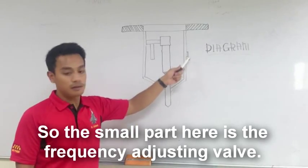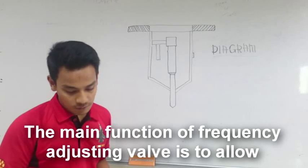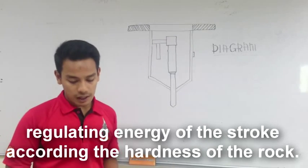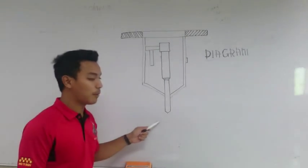This small part here is the frequency adjusting box. The main function of the frequency adjusting box is to allow regulating energy of the stroke according to hardness of the rod under the hammer here.